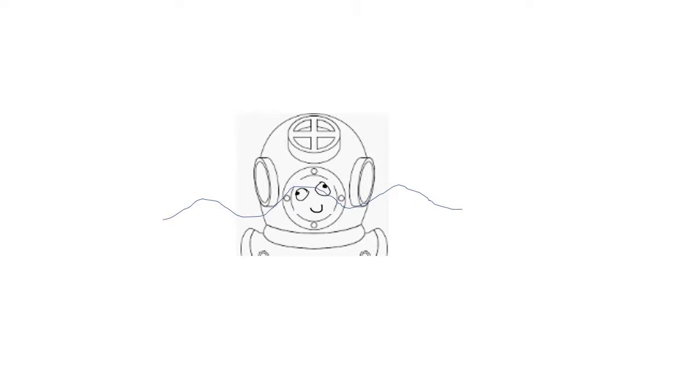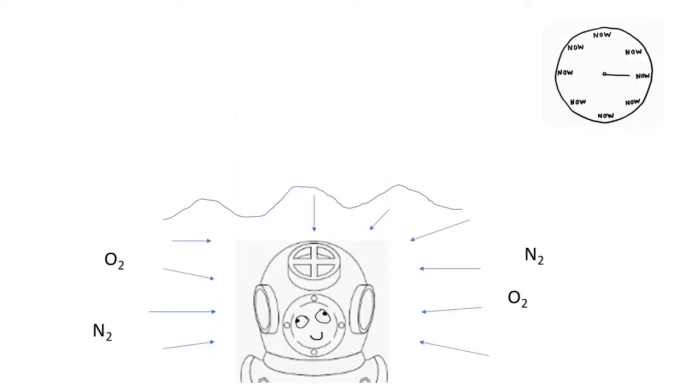During descent, ambient pressure goes up. Partial pressure of nitrogen, oxygen and anything else in the air goes up. There are now partial pressure gradients for each of these gases to enter the body. More oxygen gets into blood, more oxygen gets into the heart, more oxygen gets into the brain, and more oxygen gets into the joints. It's the same with nitrogen. As is the case at sea level, some of these molecules will be in the gaseous phase, and others will be dissolved into body tissues.